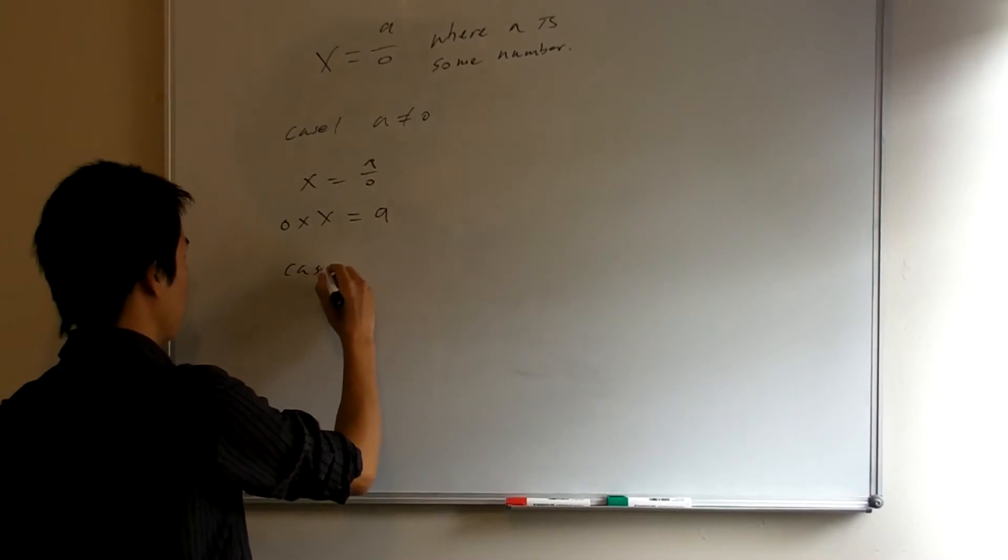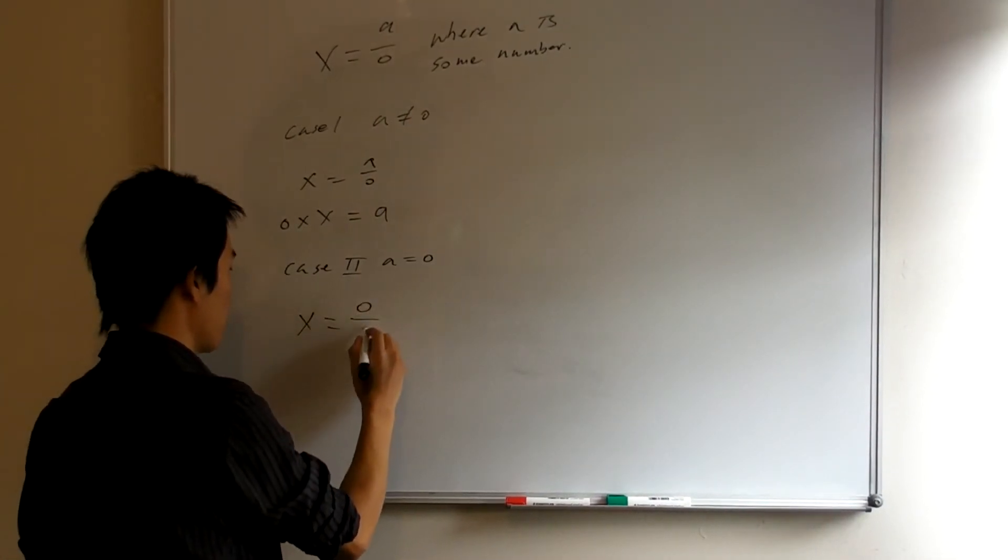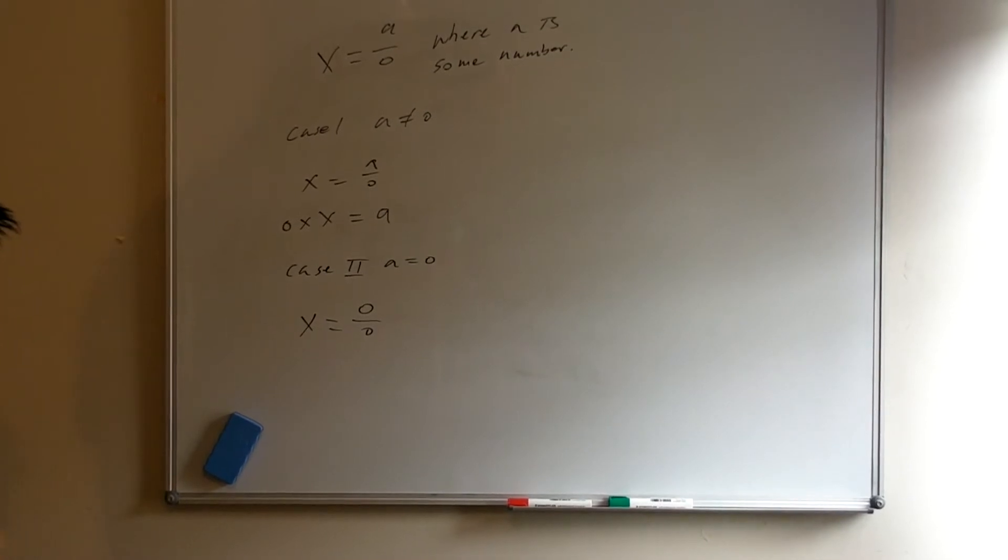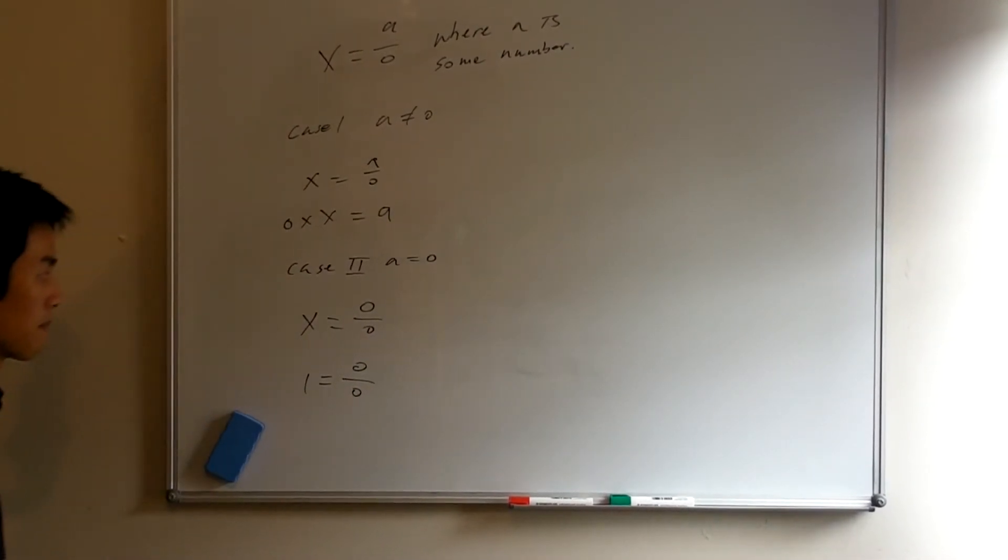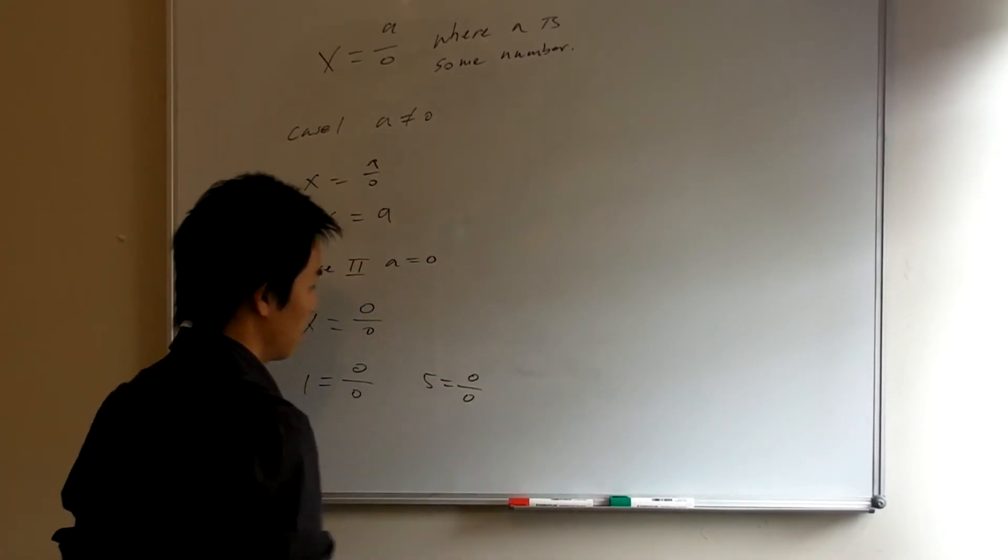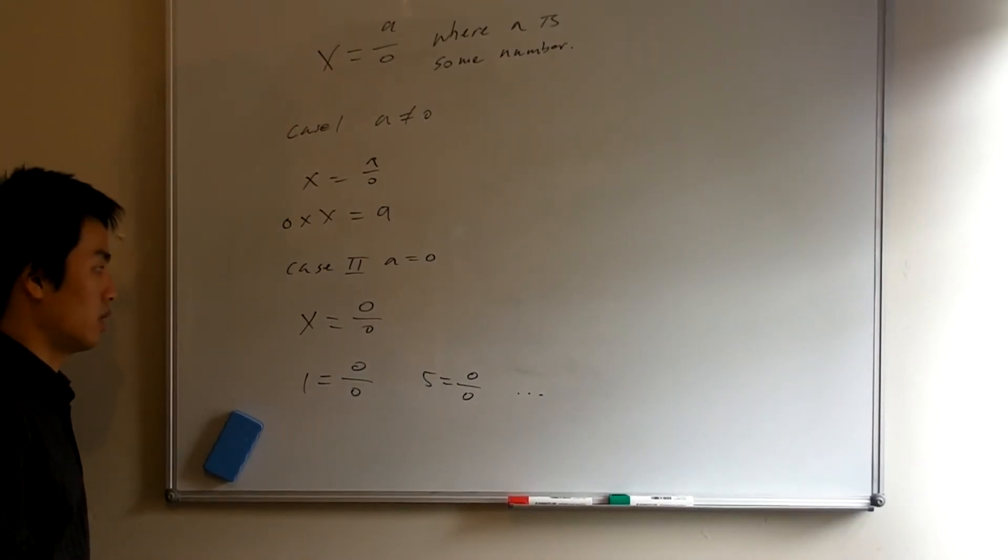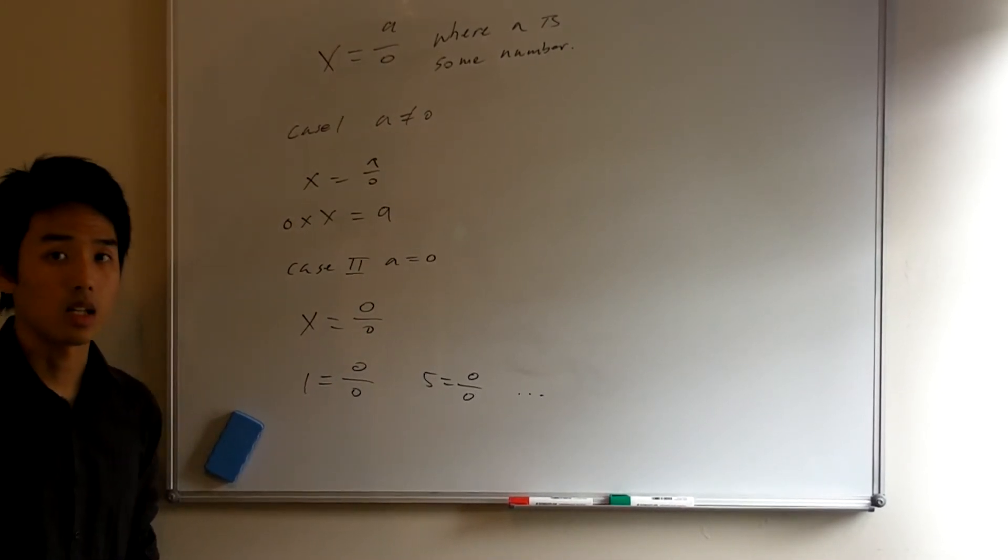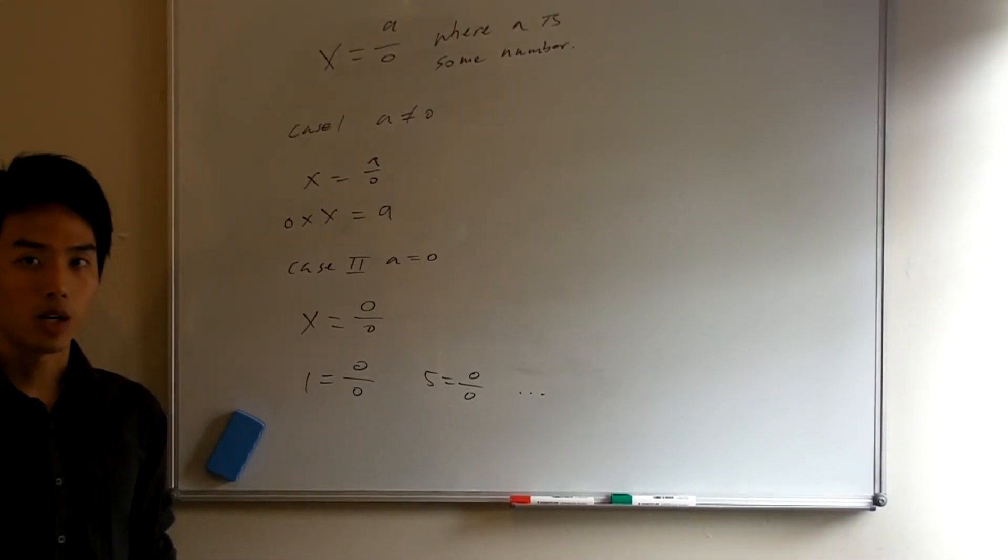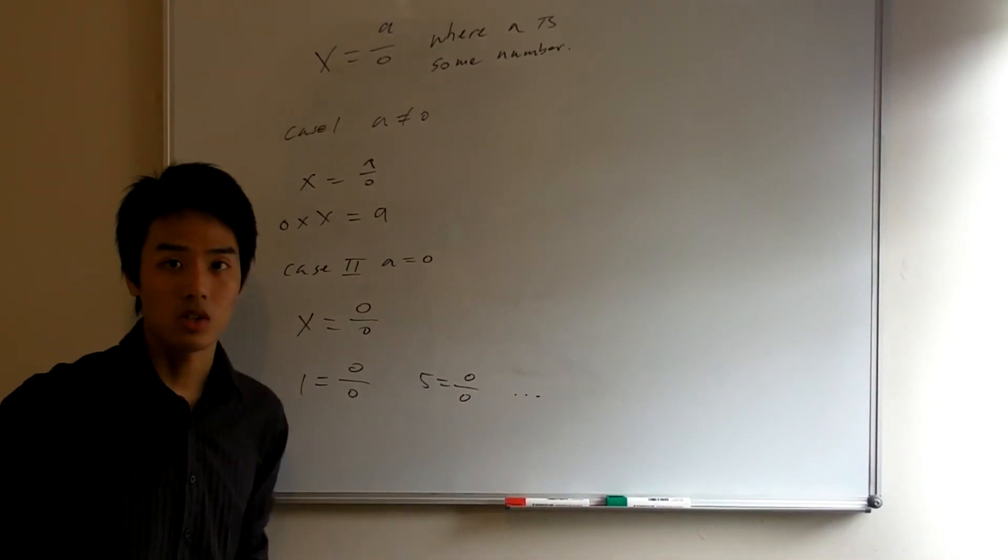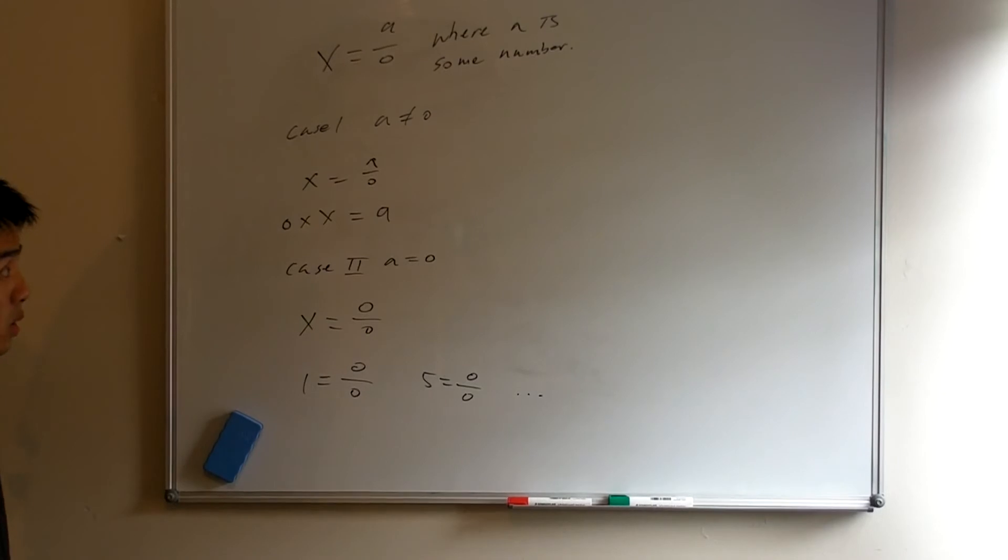Okay, what about case two? A itself is zero. So in this case, we have x is zero on zero. Now, the problem with this thing here is, well, one certainly satisfies this thing. So does five. And so does everything else. So the problem with this thing here is, the definition in this case doesn't give us anything specific. So it's not very useful. So overall, we can see that it's not impossible to define what it means to divide by zero. But it's just that once you do, you destroy the number zero itself. And the number itself is obviously a lot more important than dividing by zero. So we leave it undefined.